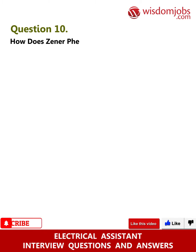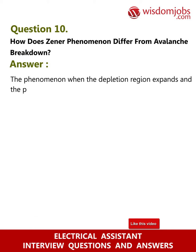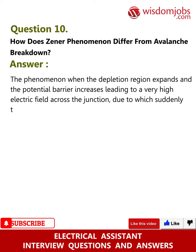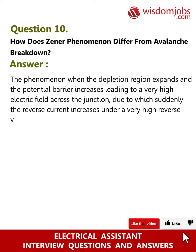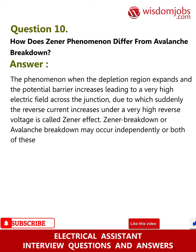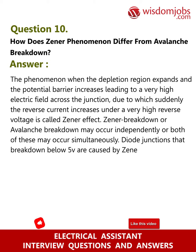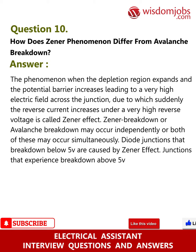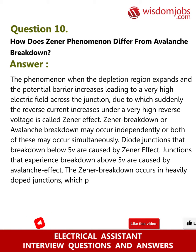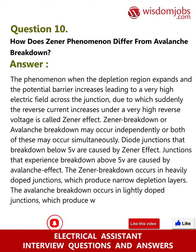Question 10: How does the Zener phenomenon differ from avalanche breakdown? Answer: When the depletion region expands and the potential barrier increases, leading to a very high electric field across the junction, the reverse current suddenly increases under a very high reverse voltage — this is called the Zener effect. Zener breakdown and avalanche breakdown may occur independently or simultaneously. Diode junctions that break down below 5V are caused by the Zener effect; junctions that break down above 5V are caused by the avalanche effect. Zener breakdown occurs in heavily doped junctions with narrow depletion layers, while avalanche breakdown occurs in lightly doped junctions with wide depletion layers.